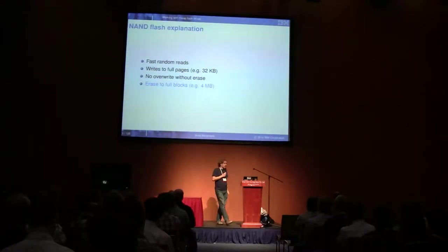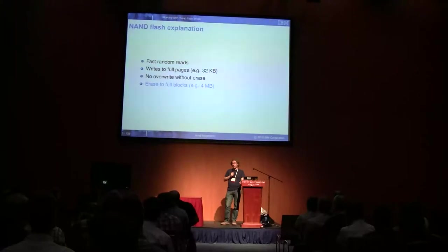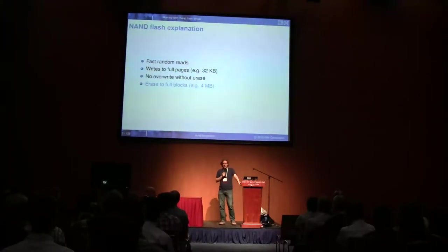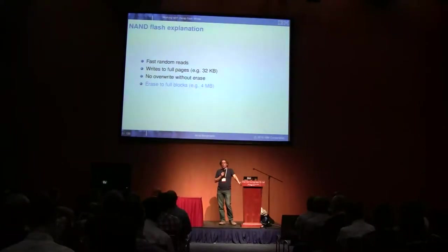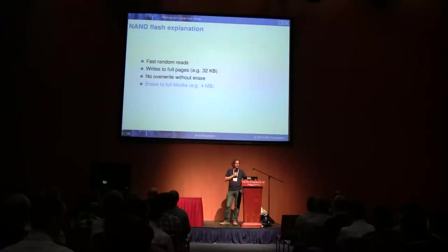On flash you can never write something again that you've already written unless you erase it first. An erase is done in a block size of typically 4 megabytes on flash media — that's what we observe. The underlying size is typically 2 megabytes, and with multiple planes and channels writing simultaneously, that's how it gets larger. The largest erase block size I've seen is 16 megabytes on a USB stick I recently bought. The smallest in new devices is about 1 megabyte, and non-powers-of-2 like 3 MB, 1.5 MB, or 6 MB are getting common.